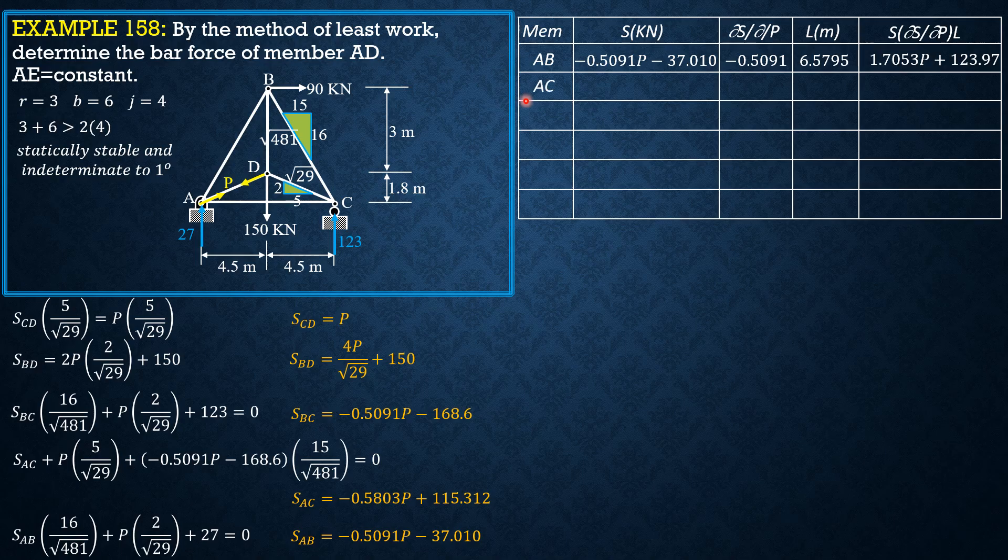AC is negative 0.5803P plus 115.312. The partial derivative with respect to P, negative 0.5803. Then the length of AC is 9, then the product 3.0307P minus 602.24.